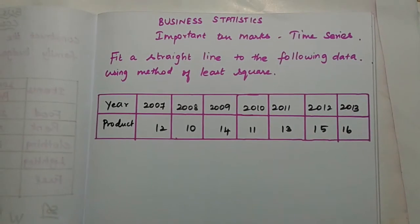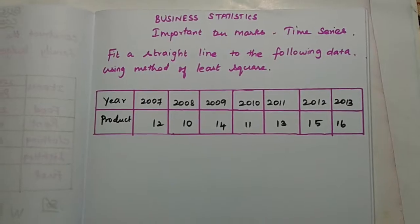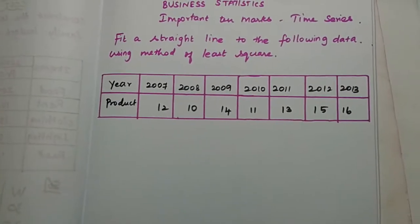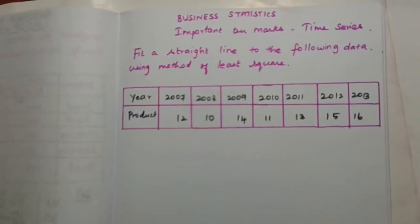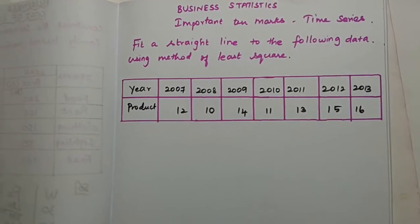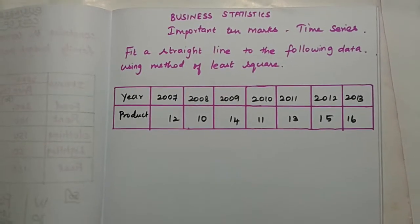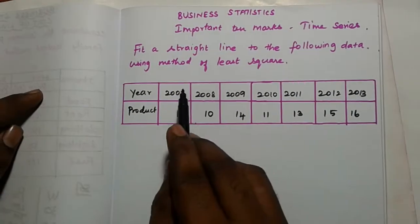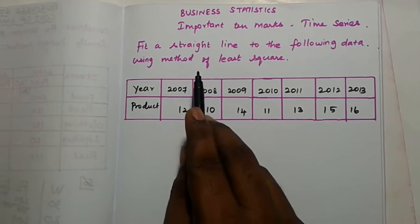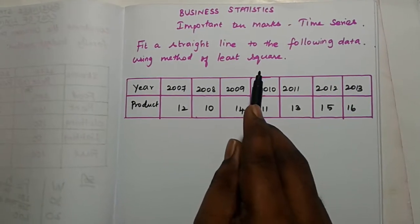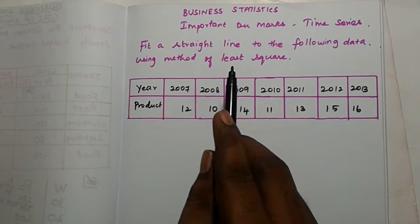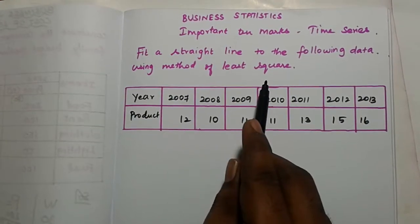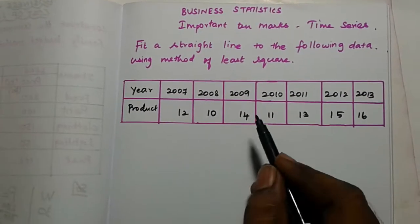We will talk about the concept. The question is: fit a straight line to the following data using the method of least squares. Sometimes it says find the trend values using the method of least squares. So the method of least squares is the 10-mark topic, and there are two categories.